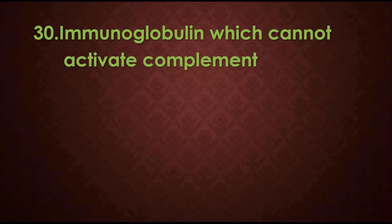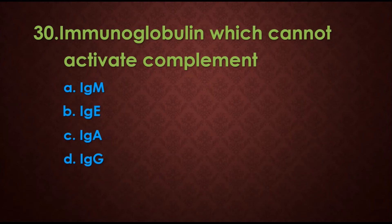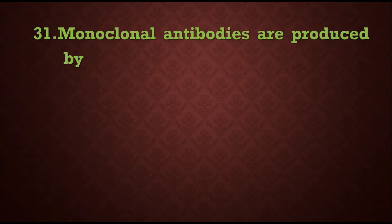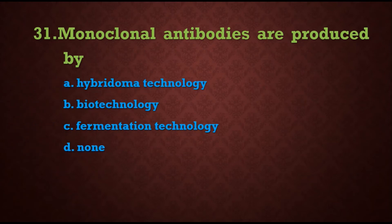Question 30: Immunoglobulins which cannot activate the complement system — options are: A) IgM, B) IgE, C) IgA, D) IgG. The answer is B) IgE, because immunoglobulin E cannot activate the complement system.